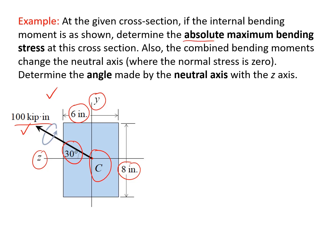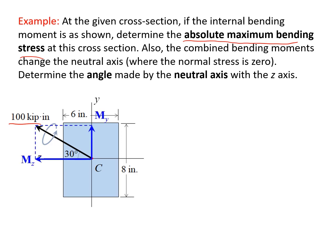The question asks: what is the absolute maximum bending stress at this cross-section caused by this bending moment? A usual way to solve this is to recognize that this moment vector can be resolved into two components: My along the y-direction and Mz along the z-direction. That can be done easily using trigonometry, and from there we apply the flexure formula to determine the maximum bending stress caused by these two components individually.